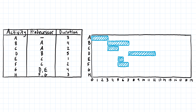Activity G depends on both D and E, so it can't start until both D and E are finished. G is four days long. Activity D ends at the end of the twelfth day, and activity E ends at the end of the sixth day. Since both have to be done, we clearly have to start after the end of the twelfth day. That's where activity G will start, and it's four days: one, two, three, four.